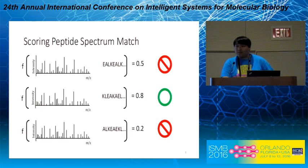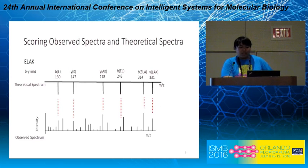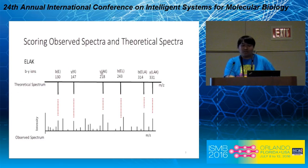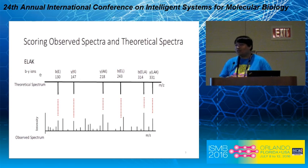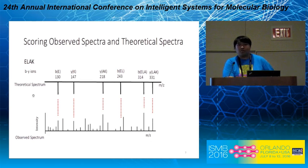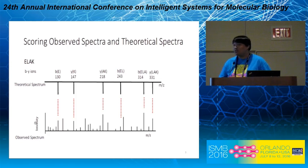To be more specific about the scoring function, typically the input peptide gets transformed into some form of a theoretical spectrum, which is essentially the m/z values of the b and y ions of the input peptide. The scoring function then tries to assign a score which reflects the similarity between the theoretical spectrum and the observed spectrum, so that the peptide generating the most similar theoretical spectrum to the observed spectrum is reported as the identified peptide.